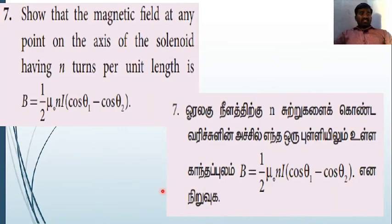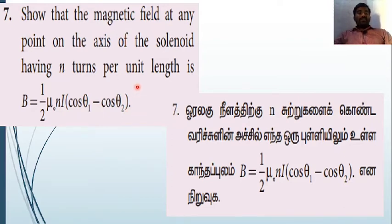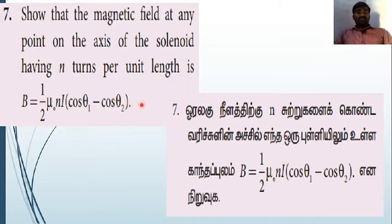Welcome. In this session we are going to discuss a numerical problem: show that the magnetic field at any point on the axis of a solenoid having n turns per unit length is B = ½μ₀nI(cosθ₁ - cosθ₂). In this question we want to find the magnetic field on the axis of the solenoid and prove that it equals μ₀nI(cosθ₁ - cosθ₂).